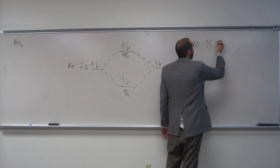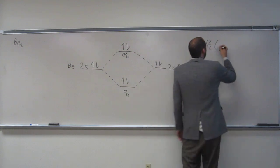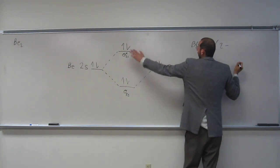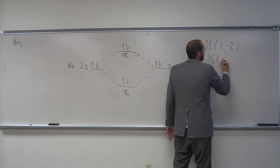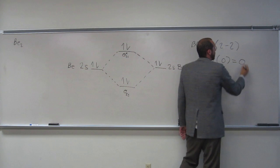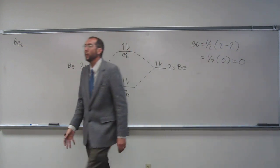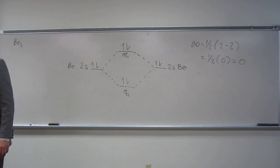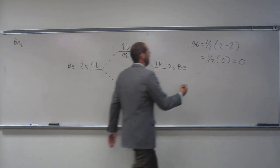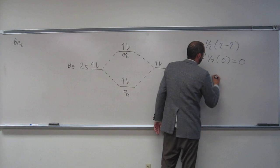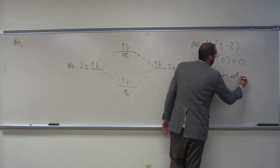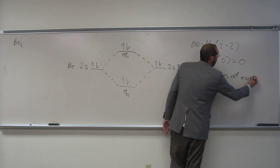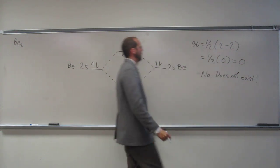Bond order is one-half the bonding electrons, which is two, minus the anti-bonding electrons, which is two. So what do we have? One-half times zero, which equals zero. So that means that the bond order is zero, so no bonds between this thing. Does it exist? No.